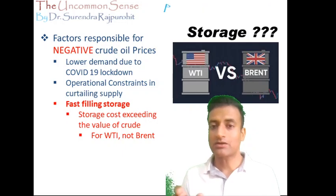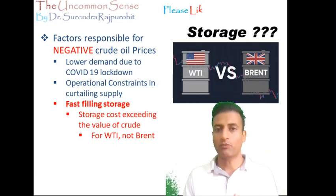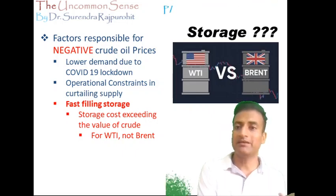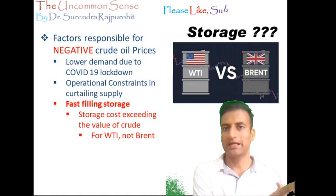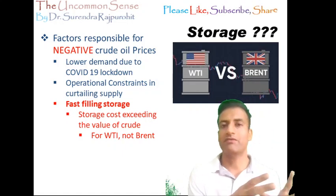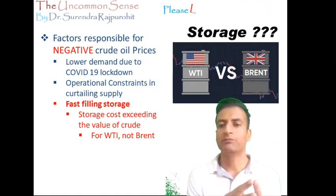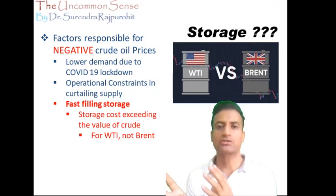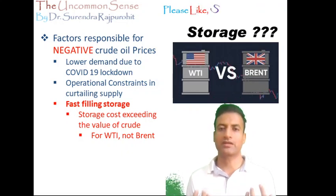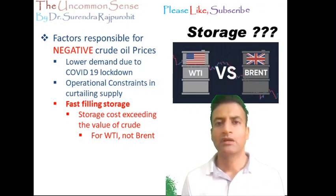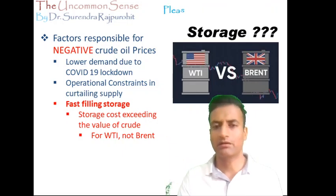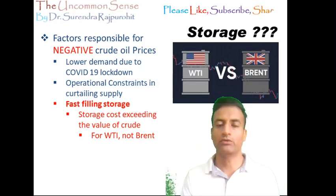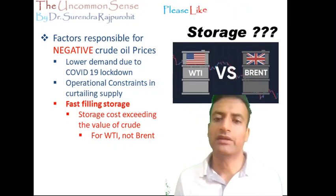This, to a large extent, also explains why there are such large differences in prices — between US oil being traded at the West Texas Intermediate, WTI, of which the prices went into negative territory, and other benchmarks like Brent crude, which is the one most commonly used and is also applicable in the case of India. Brent crude, of course, was trading at around $18, which was way above the prices of WTI, which went into negative territory.